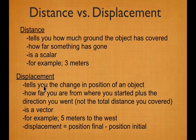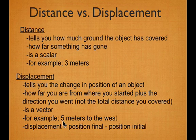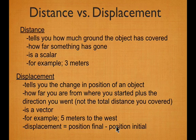Displacement is a little different. It tells you your change in position — how far you are from where you started — and also a direction. All we care about is where we started and where we ended. It is a vector because it includes a direction; for example, 5 meters to the west would be our displacement. The math is the final position minus the initial position, and it's always final minus initial. We don't care about what happened in between.